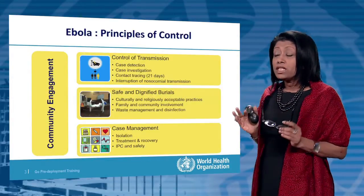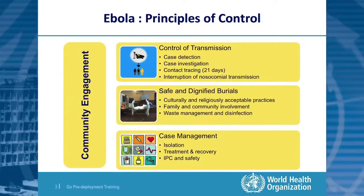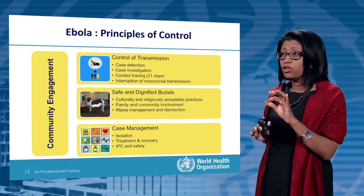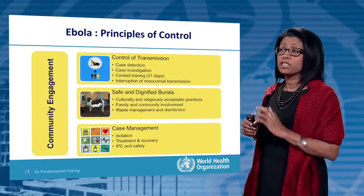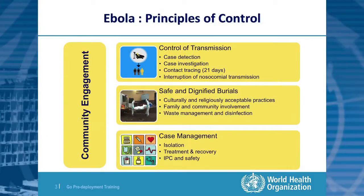There are certain principles of Ebola control to establish at the beginning. Community engagement is something that must be done across all areas of Ebola response. The other three pillars are very closely linked, and the one we're talking about in this module falls under the control of transmission. We are trying to stop the transmission from person to person in order to bring this under control and to stop unnecessary death and suffering.